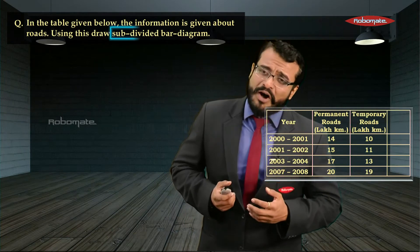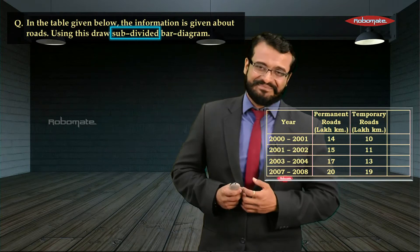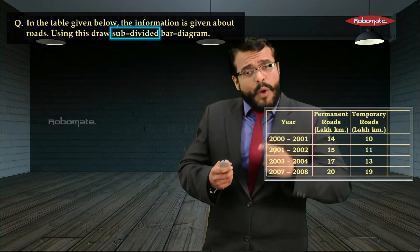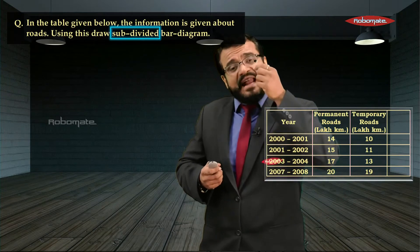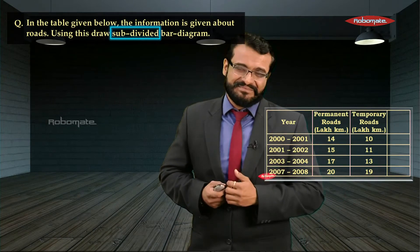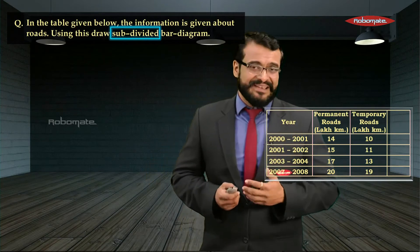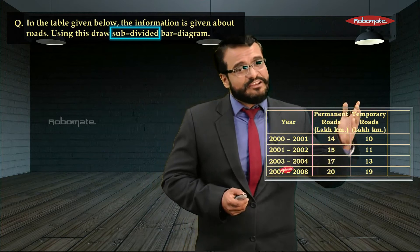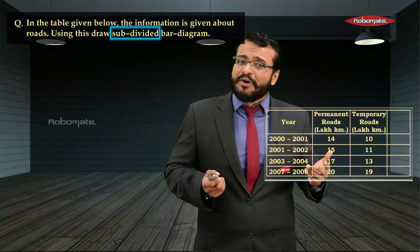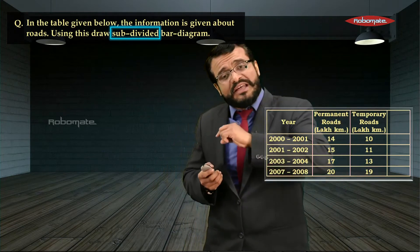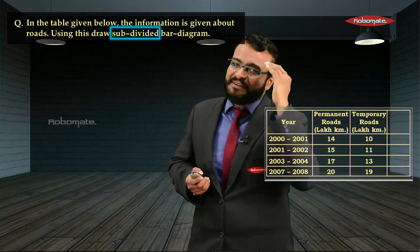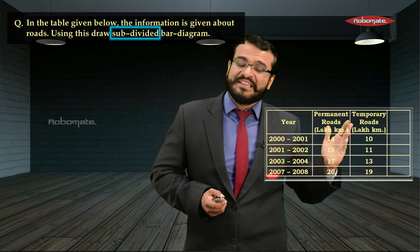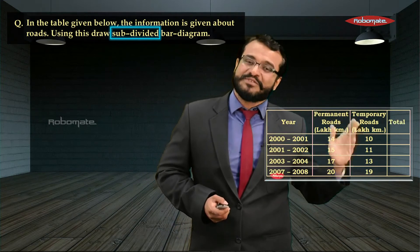We have to draw a subdivided bar diagram. As the name suggests, subdivided means one single bar will be drawn and that bar will be divided. Since we have length of permanent roads and length of temporary roads, we will draw a bar for the total length of roads and divide it into permanent and temporary.